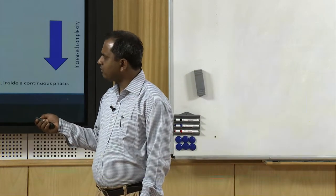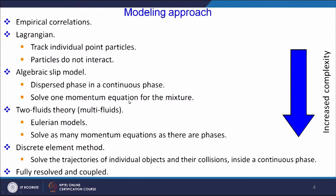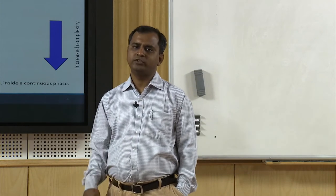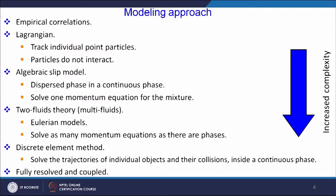Then came the idea of two fluid theory. In two fluid theory, we can separate out between the phases — we will have phase 1 and phase 2, and it is applicable for multi-fluids. Majority of these two fluid methodologies are Eulerian in nature, meaning we have a fixed reference frame with respect to space. We solve as many momentum equations as there are phases: two momentum equations for two-phase flow, three for three-phase flow, and so on.